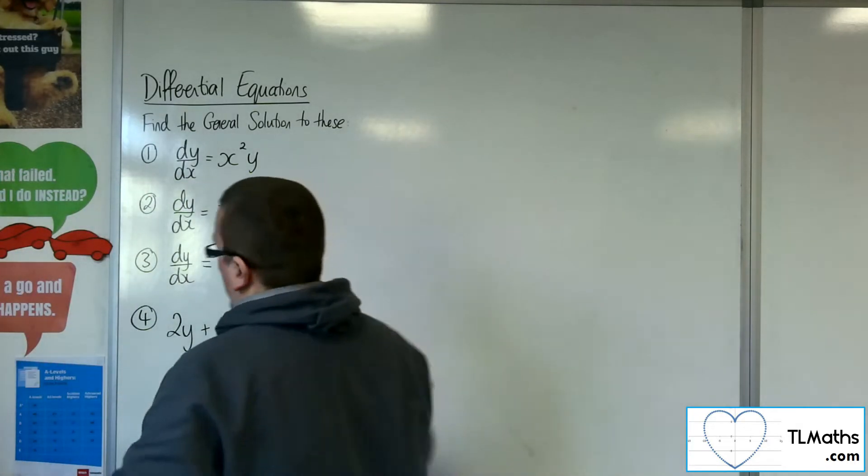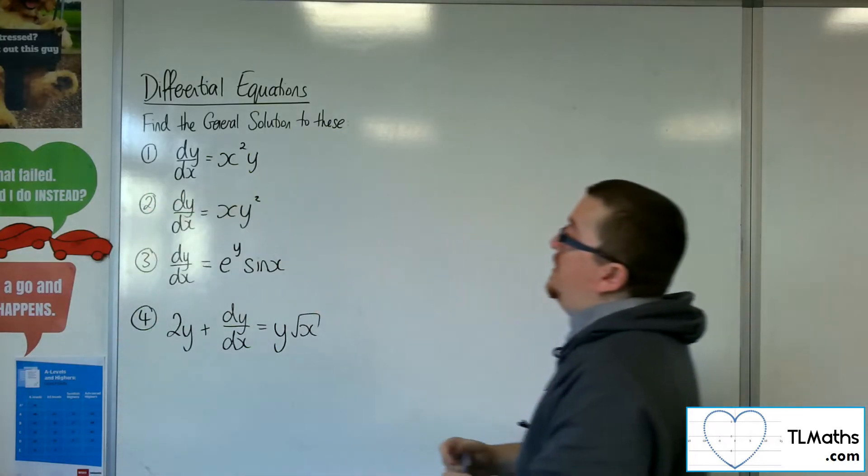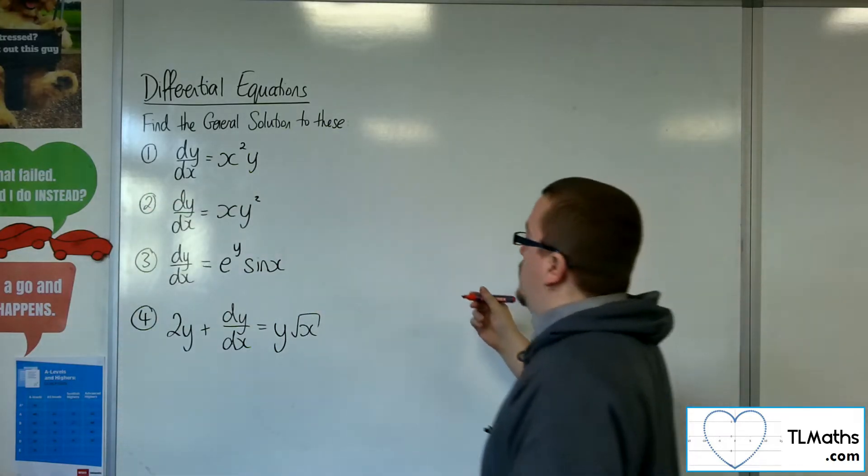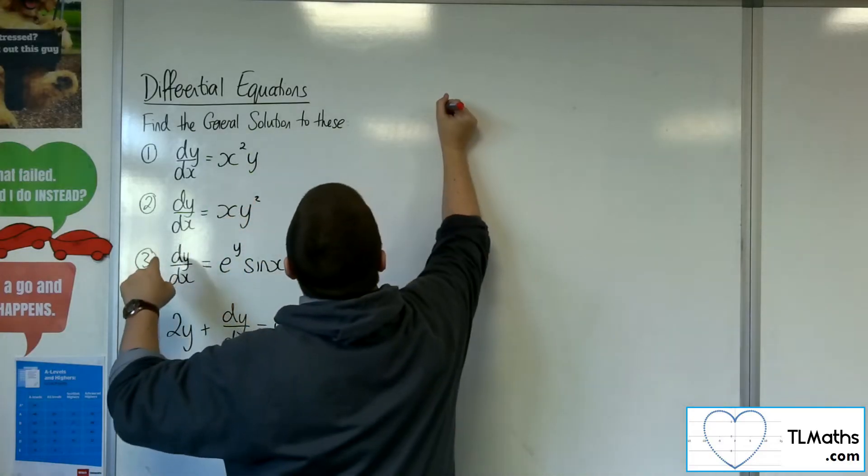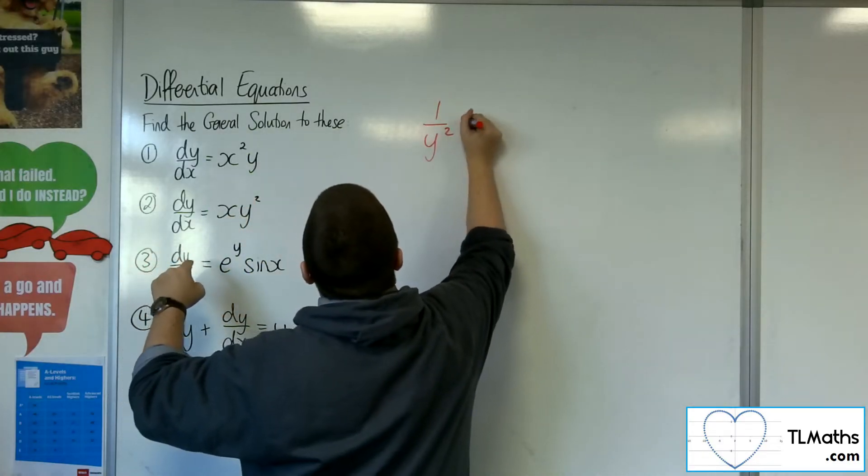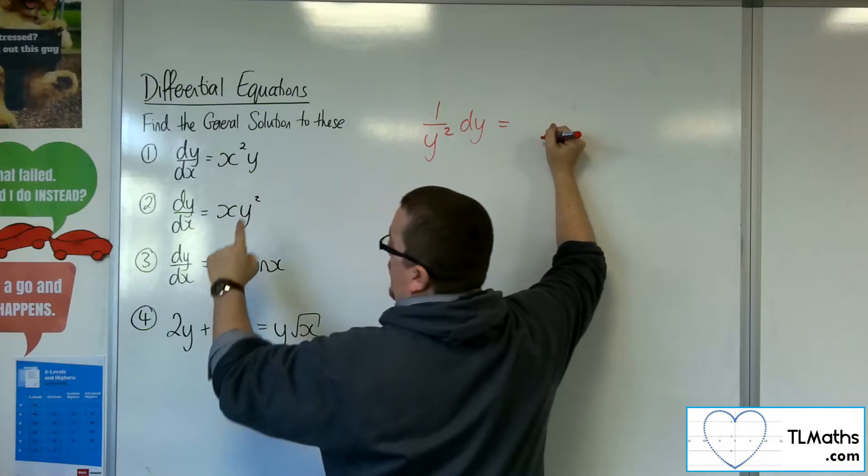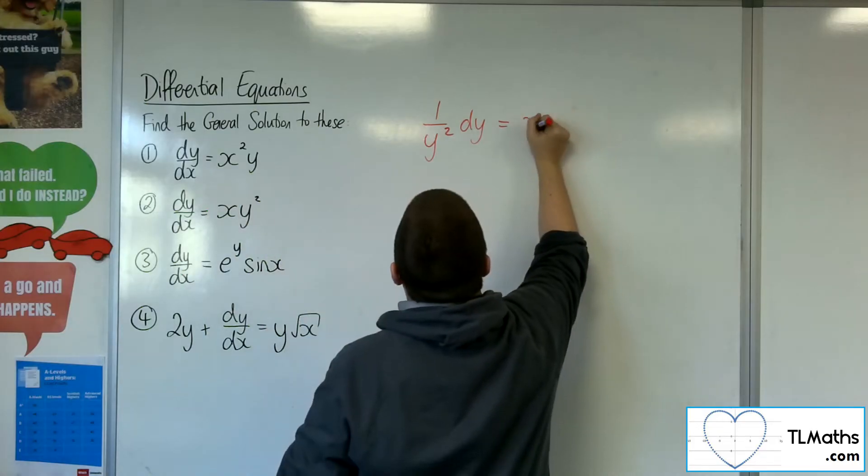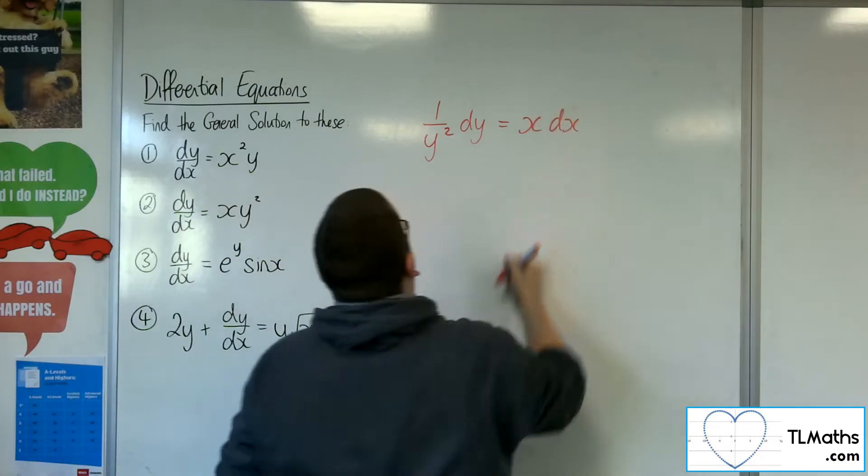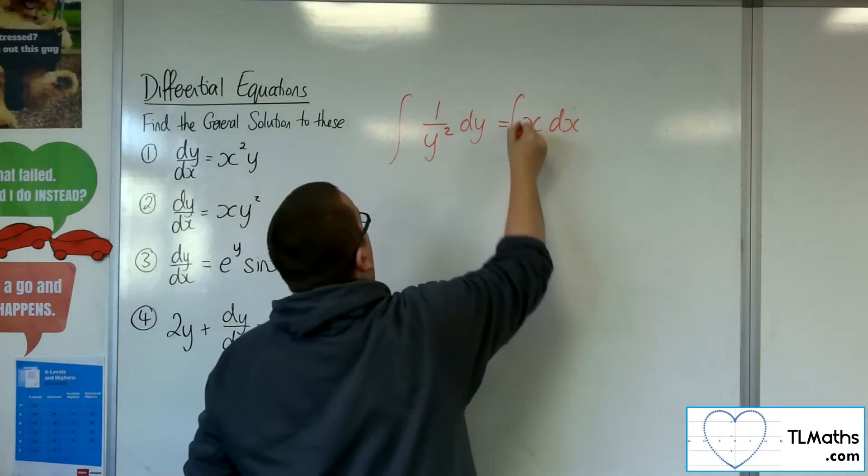So let's have a look at number 2. dy/dx equals x y squared. So I could divide both sides by the y squared, leave the dy where it is, and multiply both sides by the dx. And then I want to integrate both sides.